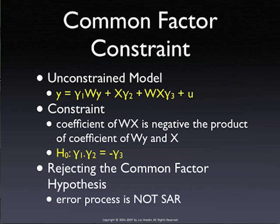Something else could also be a spatial lag model — rejection of common factors means the dynamics are not really in the error. And there's another issue in space: it could be a SAR model but with a different weights matrix. So in practice, I think it's a good idea to test this hypothesis. It is easy to put yourself in a mindset that it has to be SAR, but it really doesn't. There are lots of processes that give you spatially correlated errors that are not necessarily SAR processes.